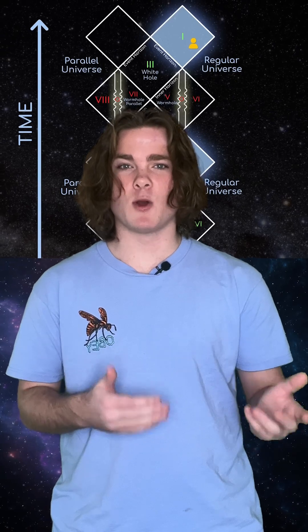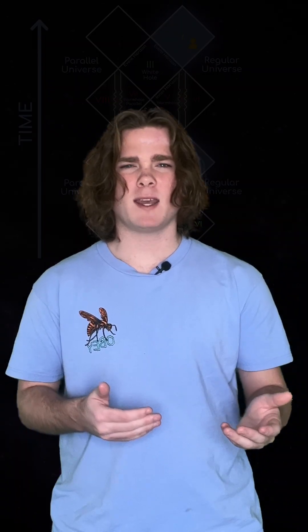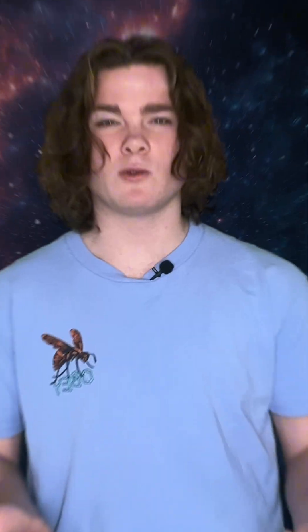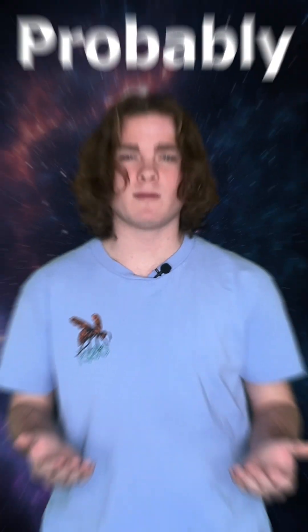Mathematically, general relativity allows both objects to exist, but while black holes form from collapsing stars, general relativity doesn't offer a convincing way for white holes to form. So do they really exist? Probably not.